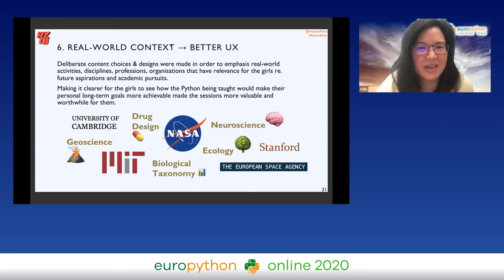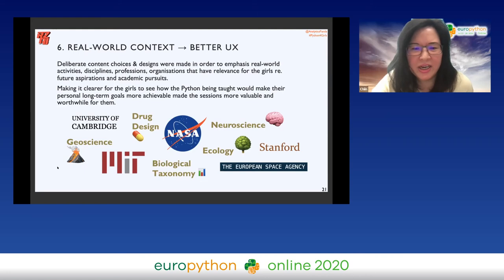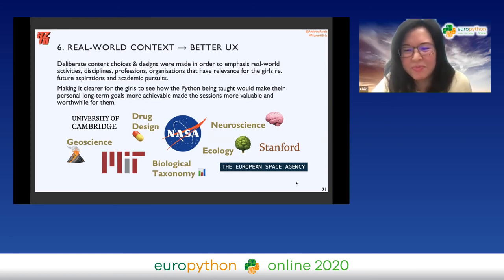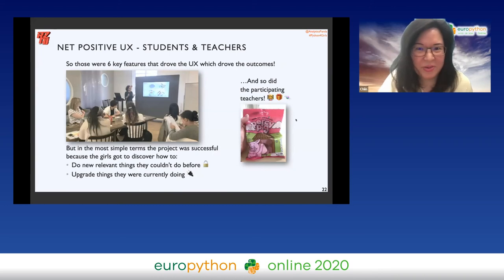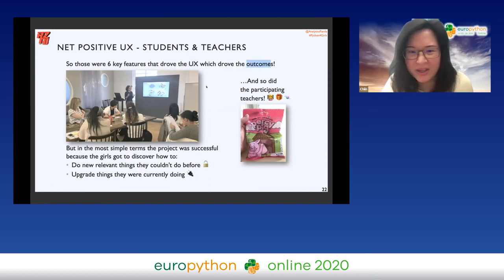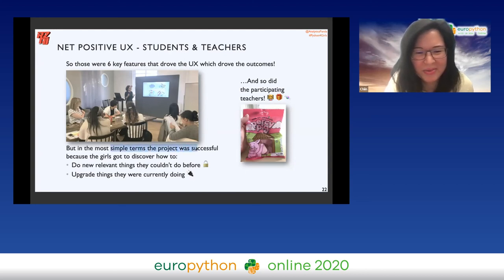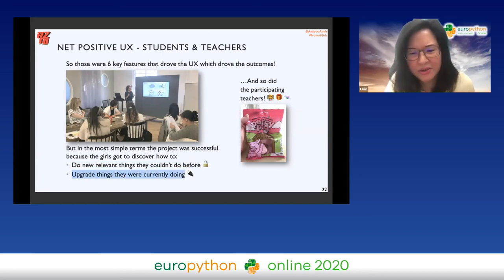The sixth feature was setting everything in as much real-world context as possible. We tied the pop culture and fun aspects to originality, and because the school is very academic I also made as many links as possible between the Python they were learning and the universities, disciplines, and organisations they cared about. To summarise in simple terms: the project was successful because the girls got to discover how to do new relevant things they couldn't do before, and upgrade things they were already doing — what I like to call 'unlock and power up.'